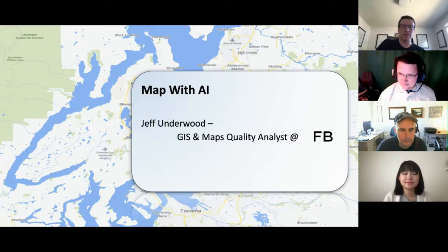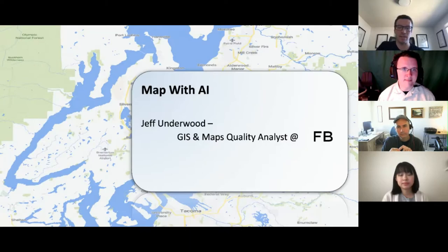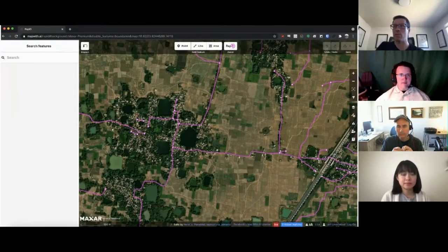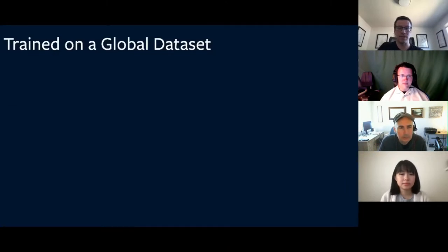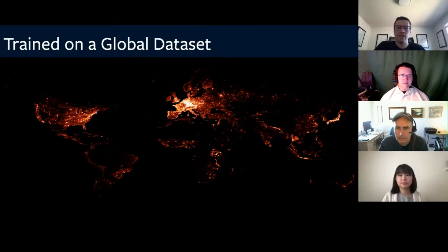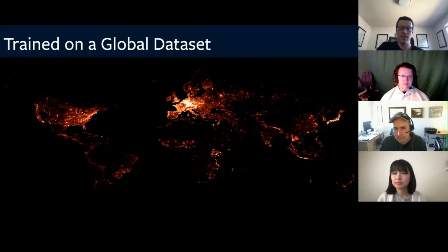I want to talk a little bit about Map with AI. Ben touched on the fact that we launched Rapid with road predictions, and Yunzi mentioned we've been mapping many countries using those same road predictions. What exactly are these? In Rapid, if you jump into any area of the world that isn't completely mapped, you'll see many pink roads — these are AI predictions. How do we do this? It starts with a global dataset for training data. We sample all over the world from OSM, using over a million one-kilometer-squared tiles of road data, evenly spread in terms of where data exists, and feed that to our machine.